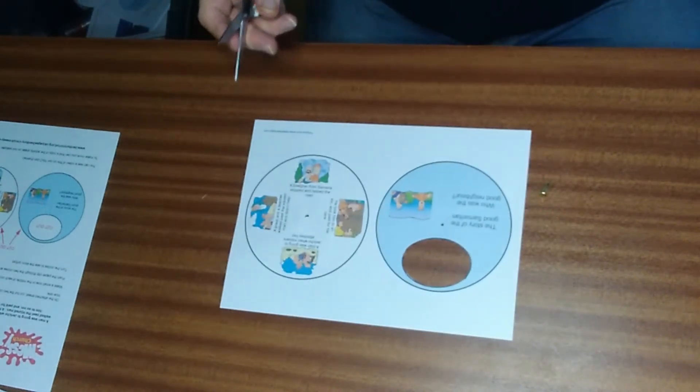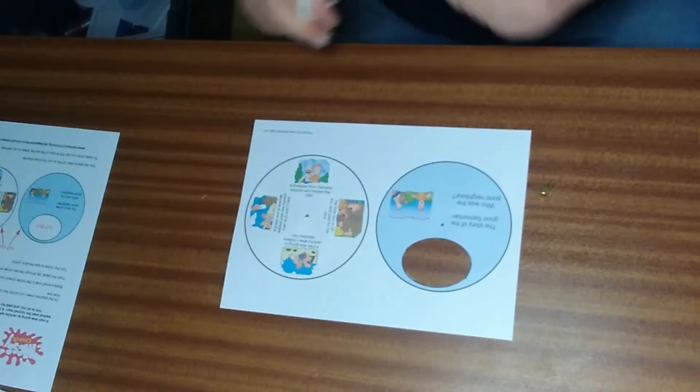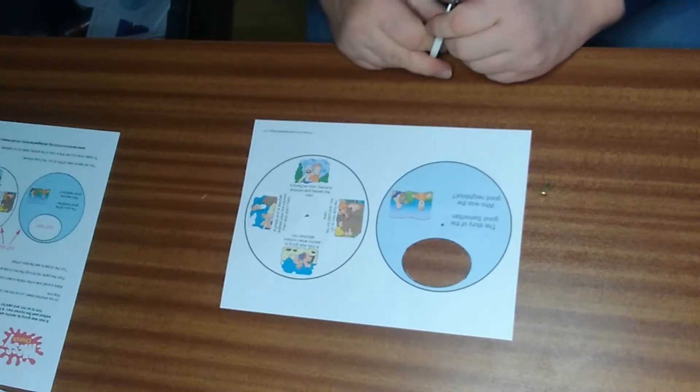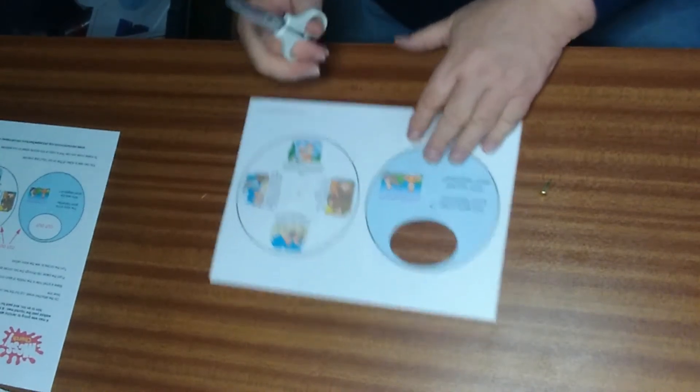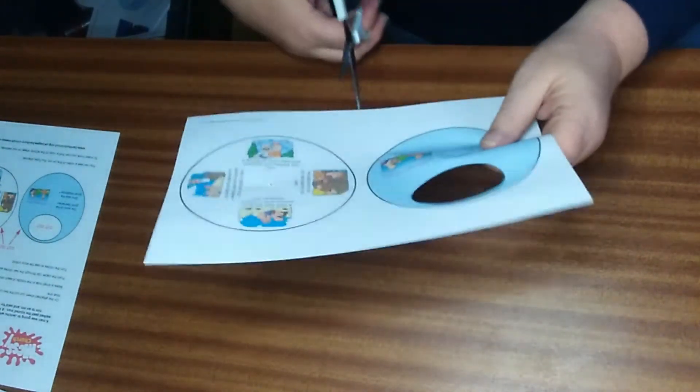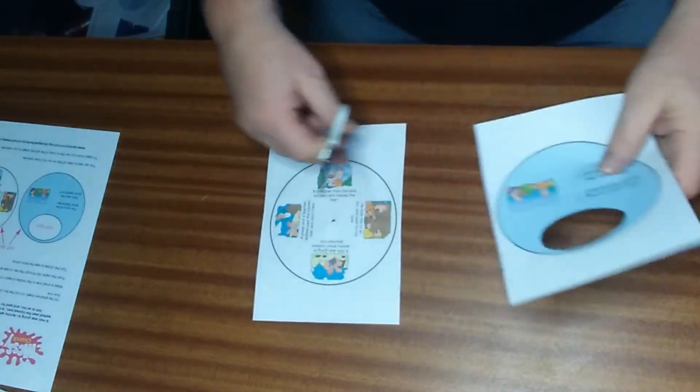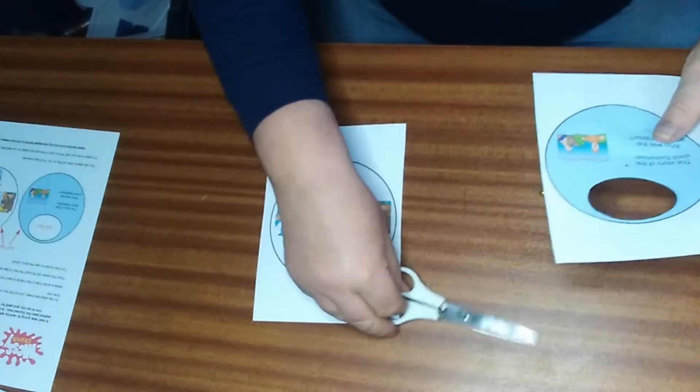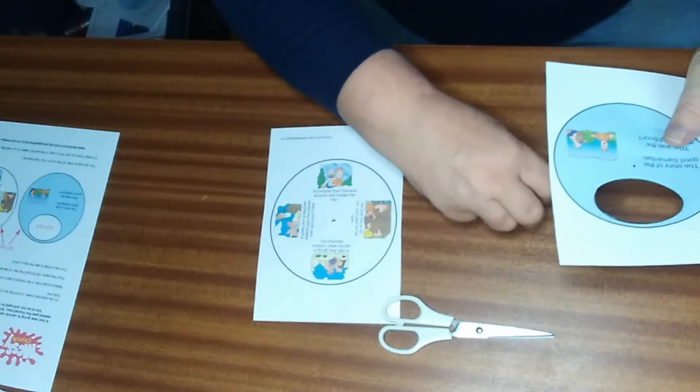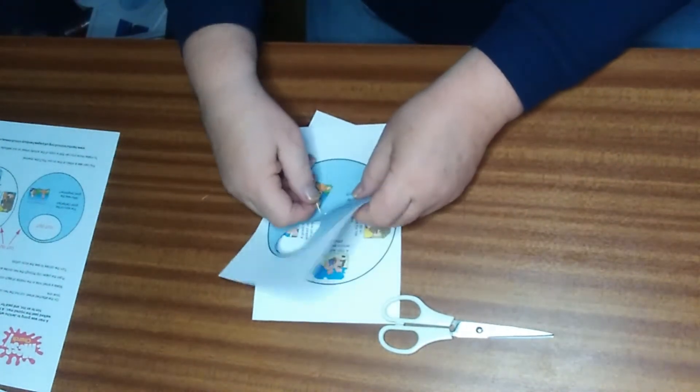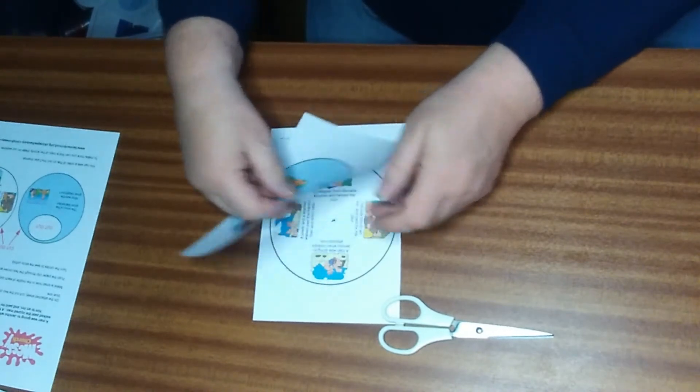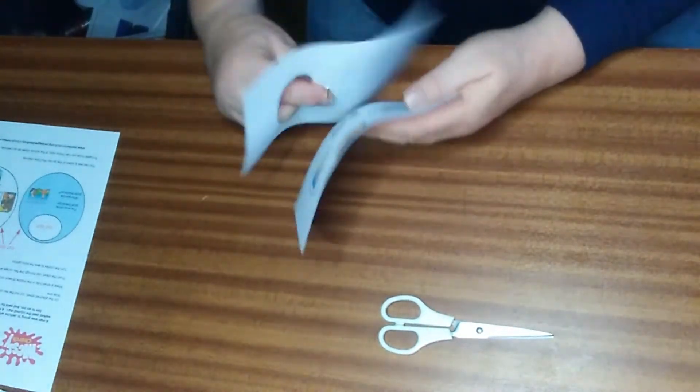Now we're ready for the next step, and that is to cut out the circles. You can cut them out as two separate circles. However, we've made the holes, and I prefer to pin the pieces of paper together by putting the fastener through and opening it up at the back.